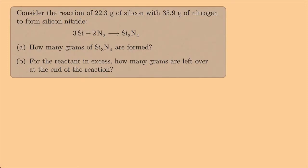Consider the reaction of 22.3 grams of silicon with 35.9 grams of nitrogen to form silicon nitride. How many grams of silicon nitride are formed? And for the reactant in excess, how many grams are left over at the end of the reaction?